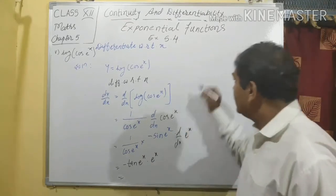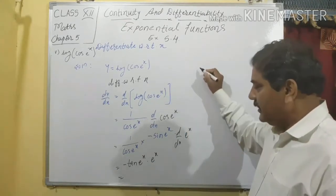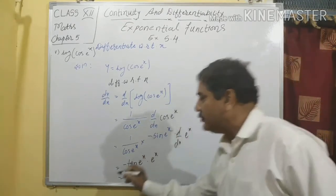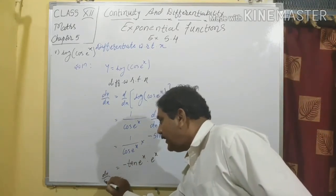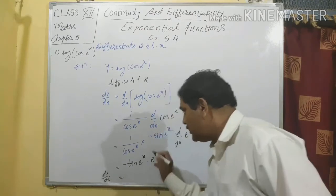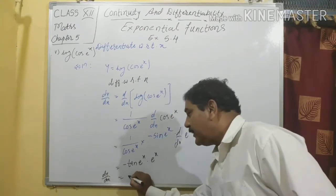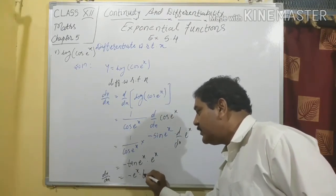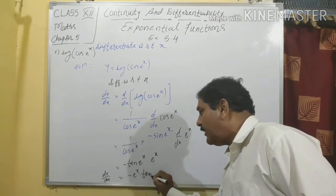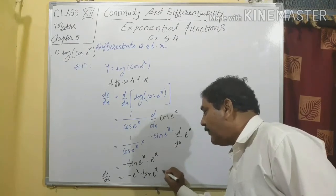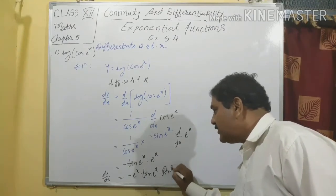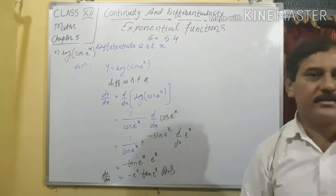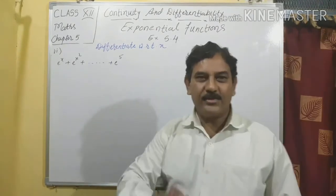Simplifying sin/cos = tan, the answer is dy/dx = −e^x · tan(e^x). This is the answer.